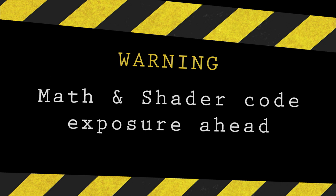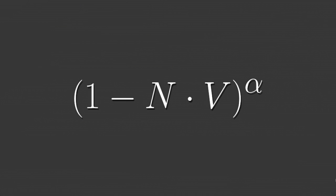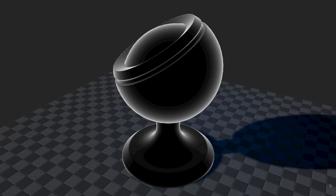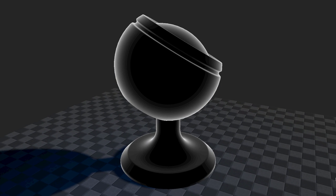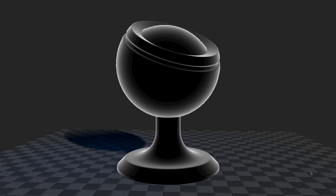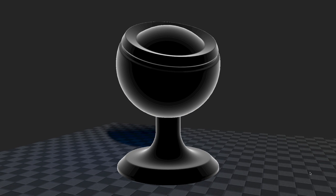A little warning: there is some math in shader code ahead. If you're an artist who really dislikes that, please don't leave the room — it's there to illustrate a larger point. This is quite a simple equation: a Fresnel equation. A Fresnel equation is essentially a rim light shader. It looks like this — white toward the edges and black toward the center. That's the very basic Fresnel implementation.